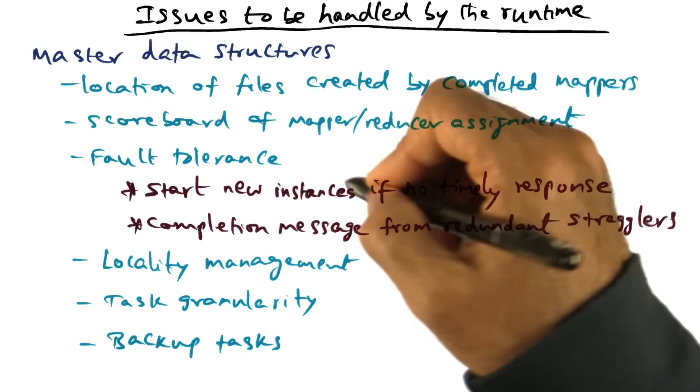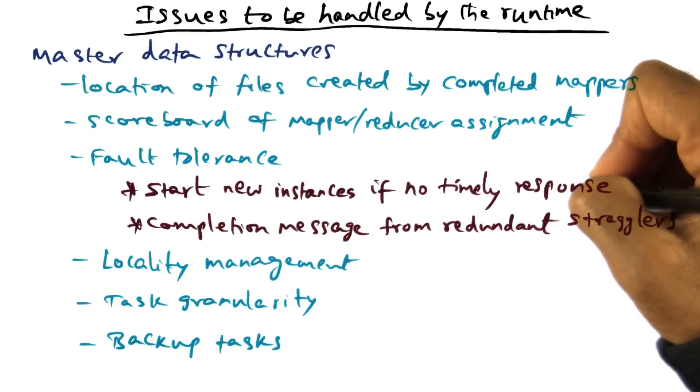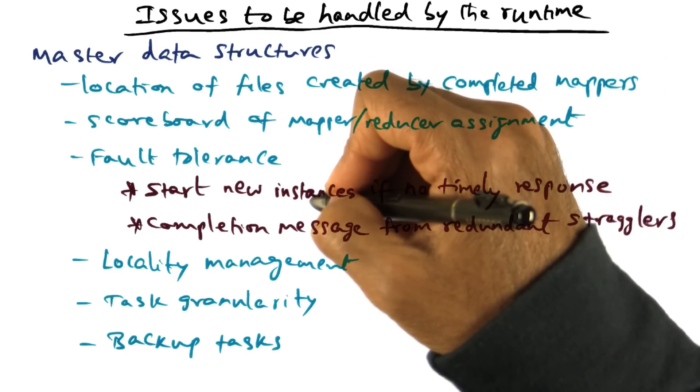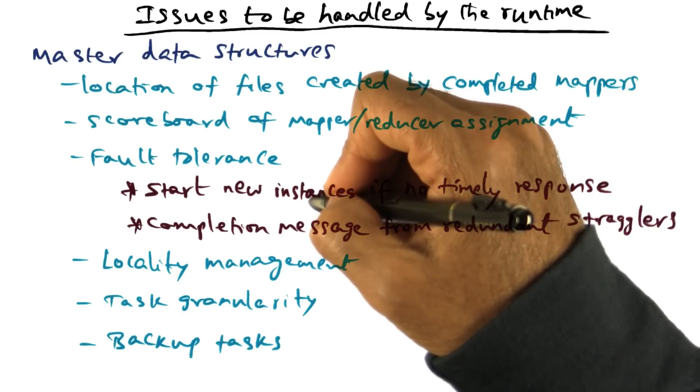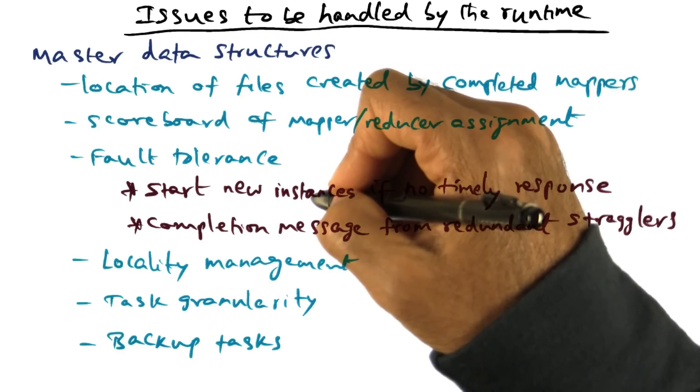In any event, what might happen is that a master may notice that there is no timely response from a particular instance, let's say of a mapper. In that case, it might say, well, I'm going to go ahead, assume that that mapper is dead. I'm going to restart that mapping function on a different node of the cluster.